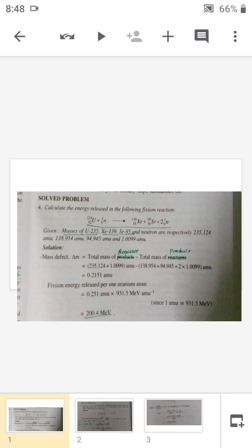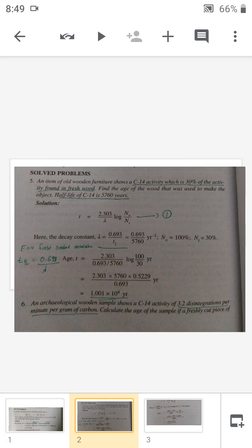Now we have to find out the fission energy released. The fission energy released is the mass defect times 931.5 million electron volts per amu, because we know the conversion: one amu of the substance will release 931.5 million electron volts. Our mass defect is 0.251 amu, so we multiply this quantity by 931.5 million electron volts per amu, and we'll get the answer as 200.4 million electron volts.